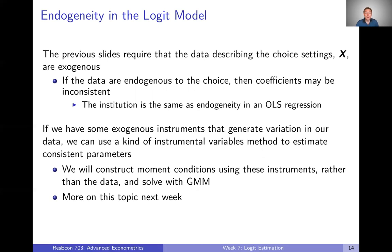If the data are endogenous, our coefficients will be inconsistent — we just don't know how inconsistent they are. This intuition is exactly the same as endogeneity in OLS regression. It turns out that even if our data are endogenous, if we have exogenous instruments that generate variation in our data, we can use an instrumental variables method to estimate consistent parameters. We'll slightly adjust those sample moment conditions to use our exogenous instruments instead of the endogenous data, and estimate using GMM.